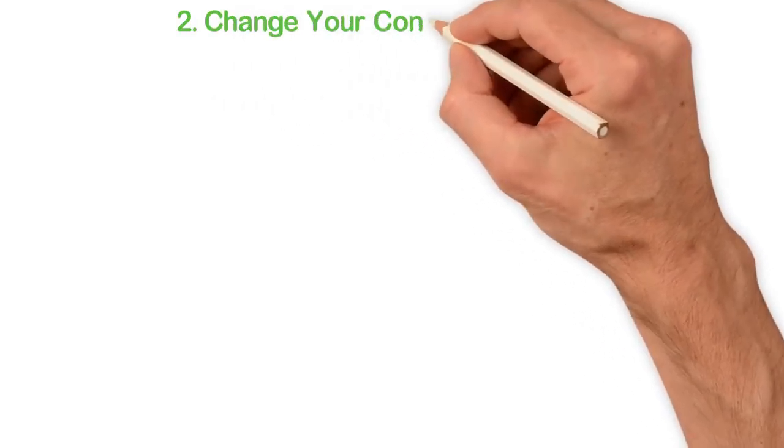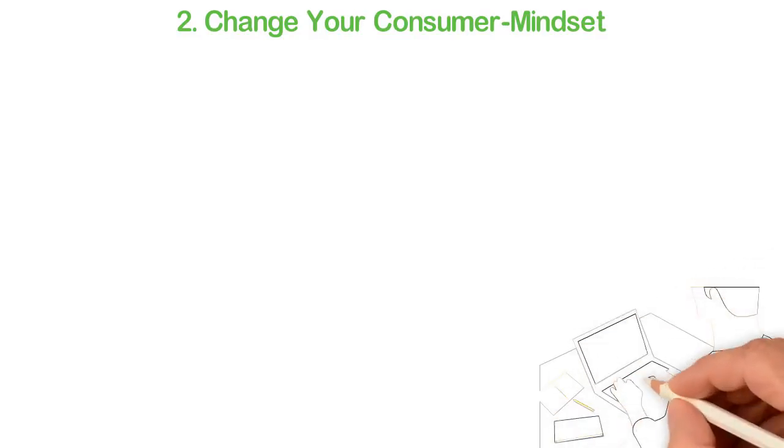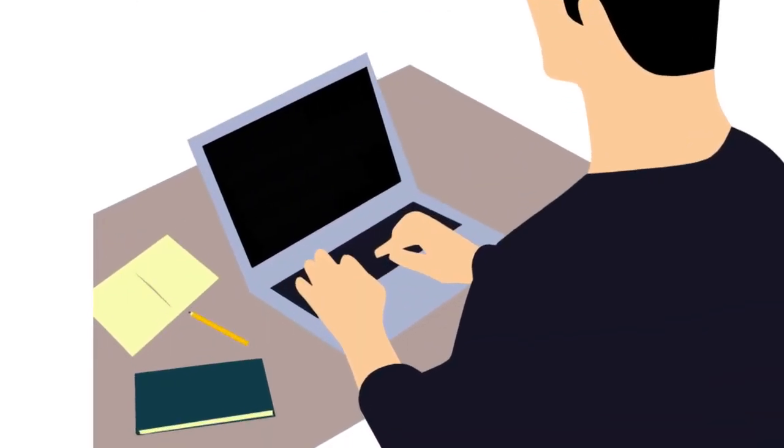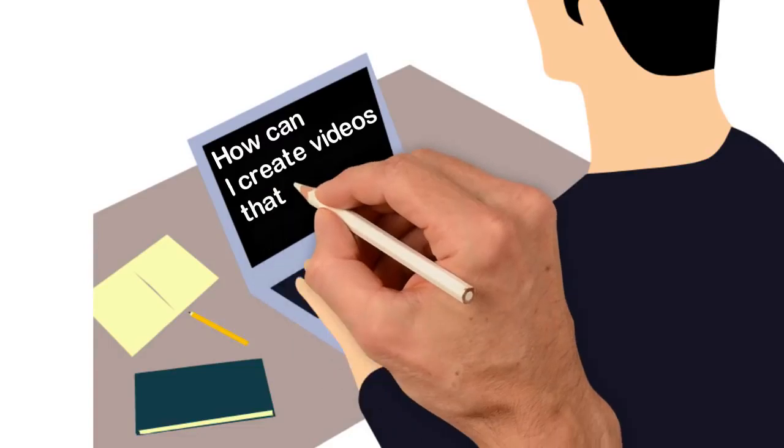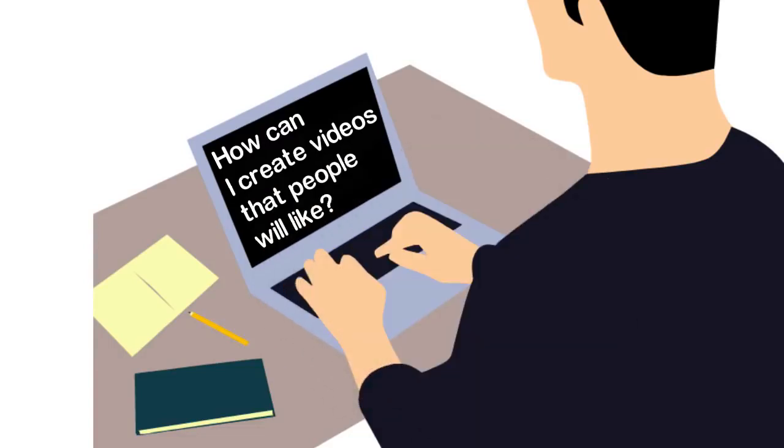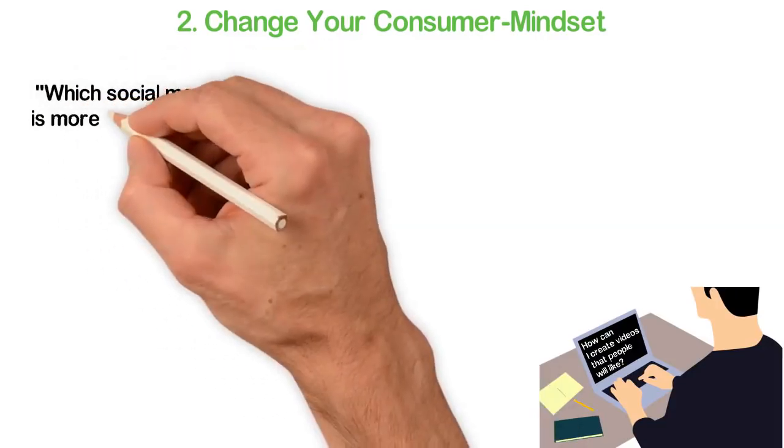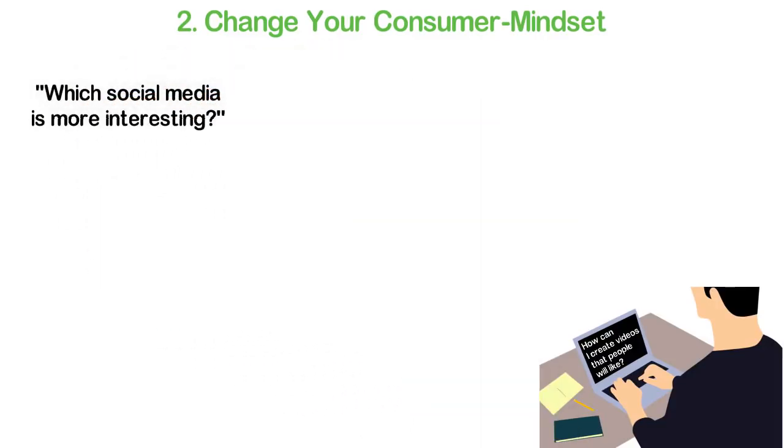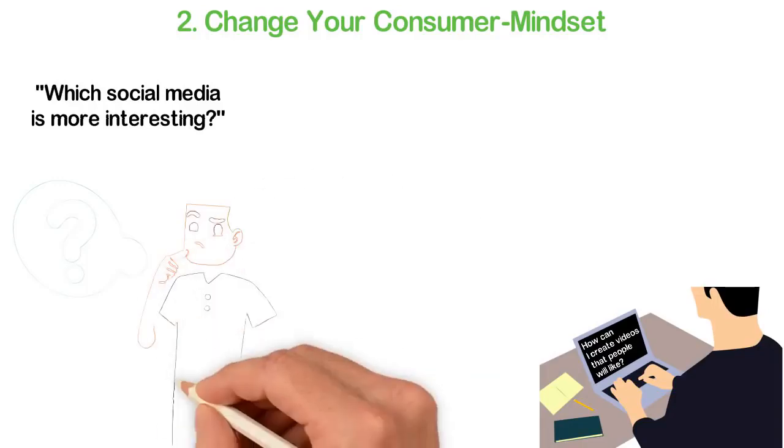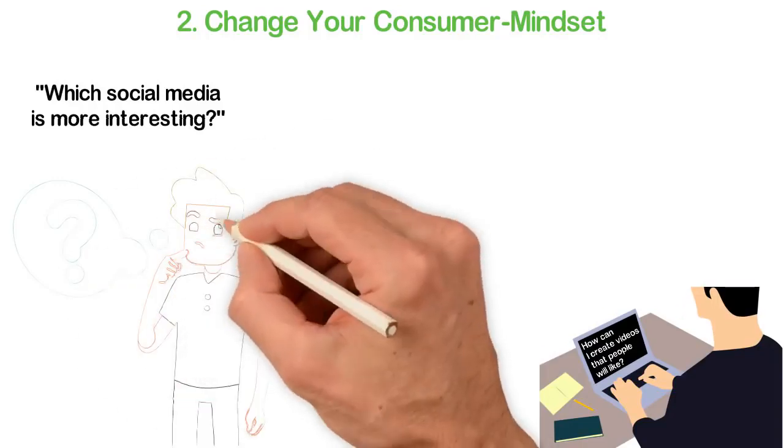2. Change your consumer mindset. When I got to know about Facebook, my first concern was: can I sell through it? When I got to know about how popular YouTube is, my first question was: how can I create videos that people would like? Consumers don't think that way. Instead, they think: which social media is more interesting? Theirs is to consume, so they are not thinking of how to serve people and make money from them.